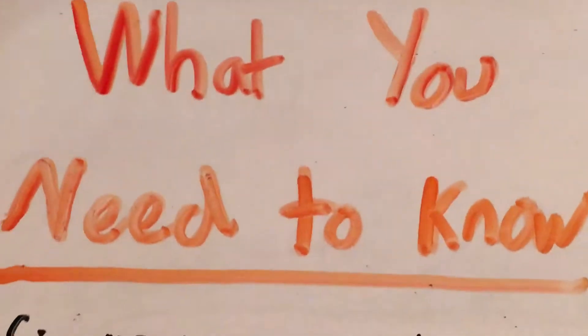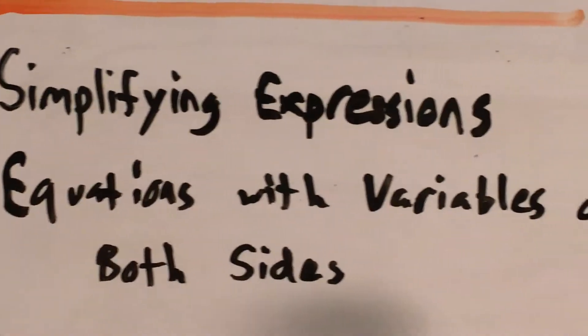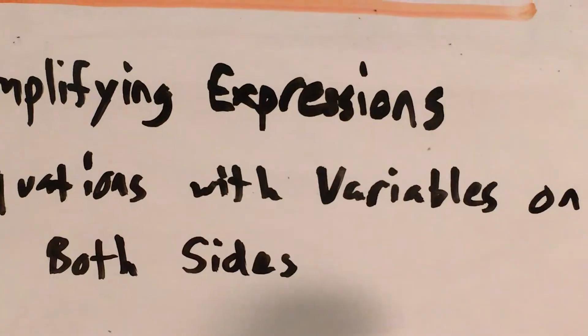To do a question like this you'll need to know how to simplify expressions, and specifically we'll be using the distributive property and combining like terms, and you'll also need to know what to do with an equation if you have a variable on both sides.